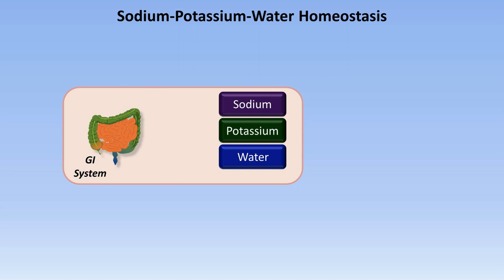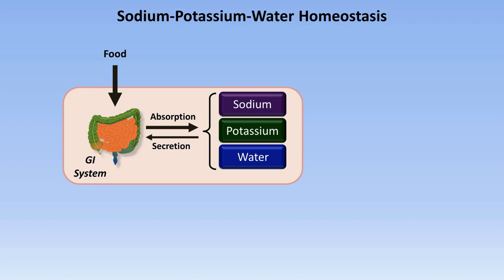First is the GI system. We take in these electrolytes and water and food. Some of this gets absorbed in the GI tract and some get secreted. Whatever remains in the GI tract that either wasn't absorbed or was actively secreted is then expelled in the feces.